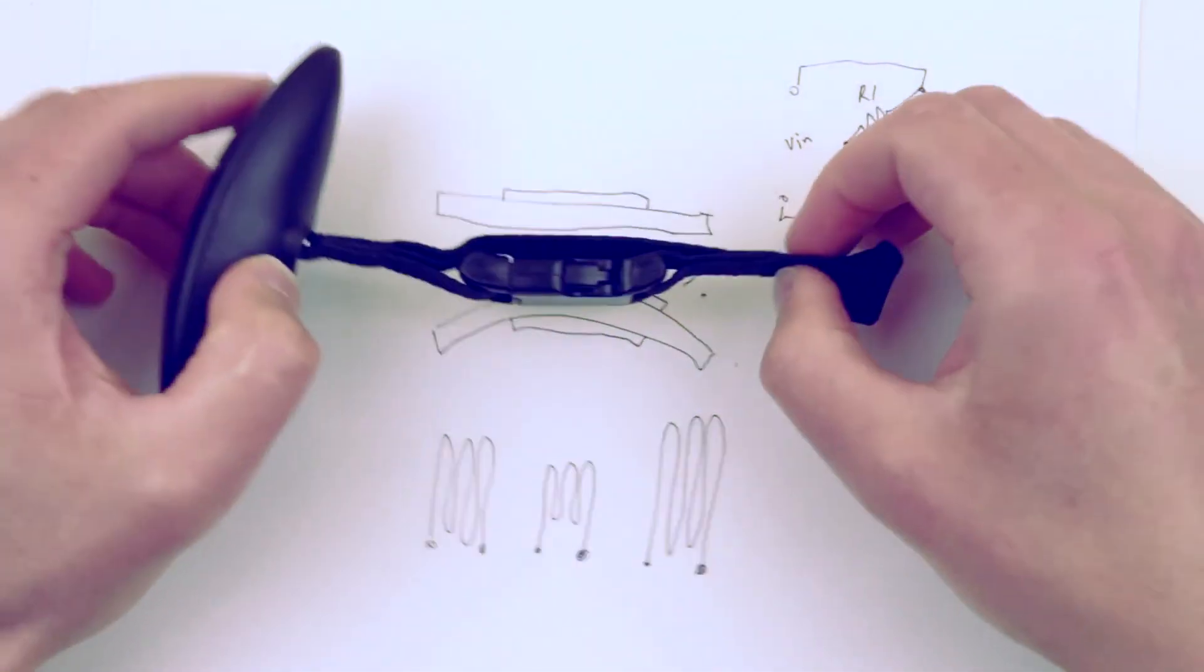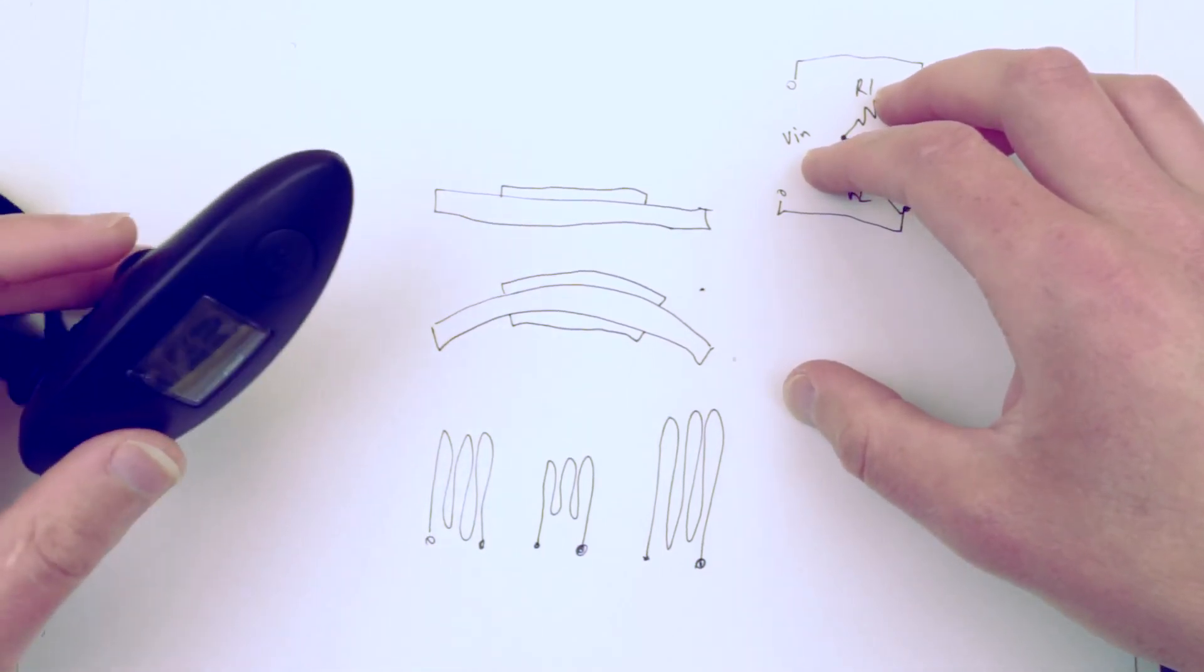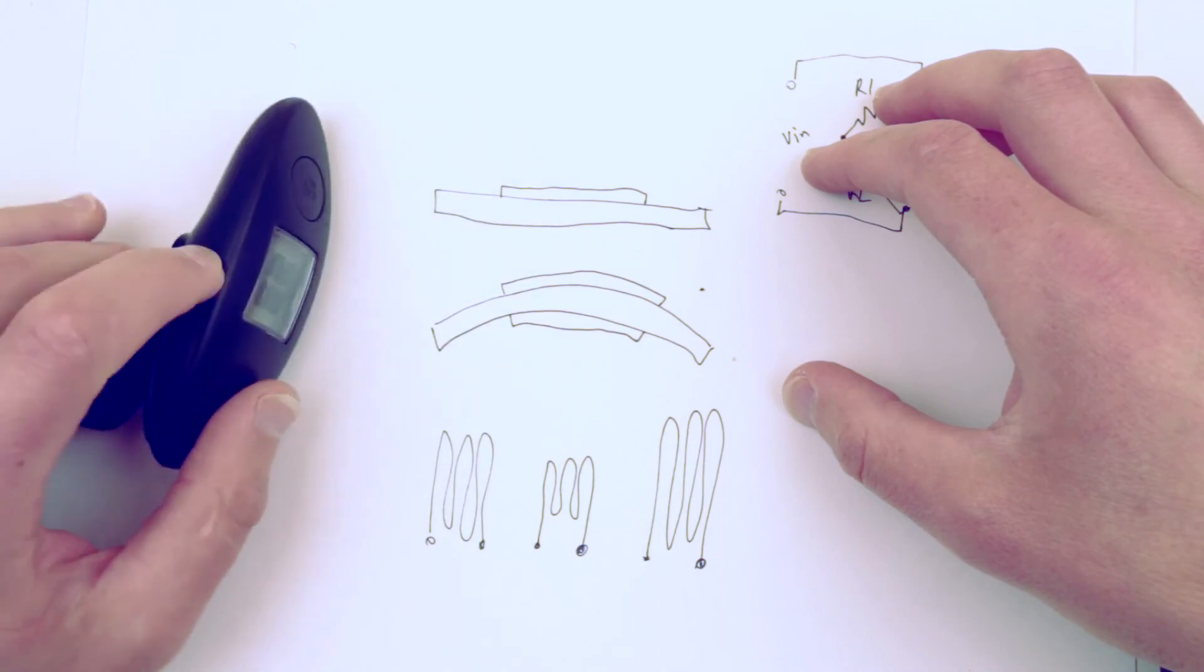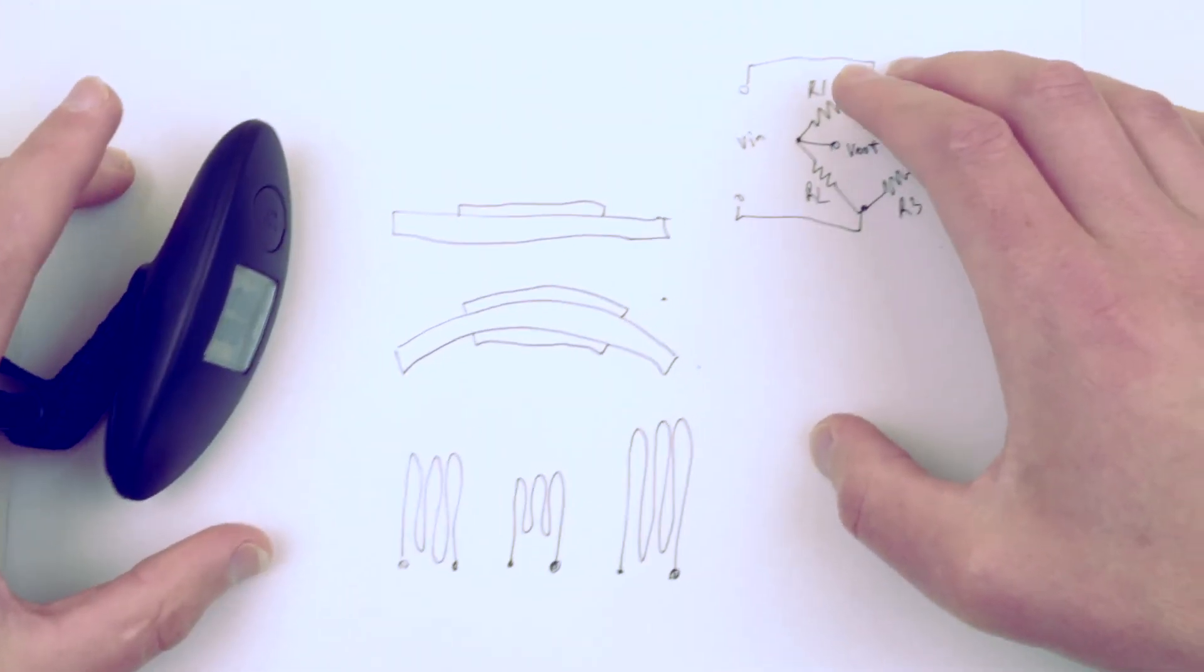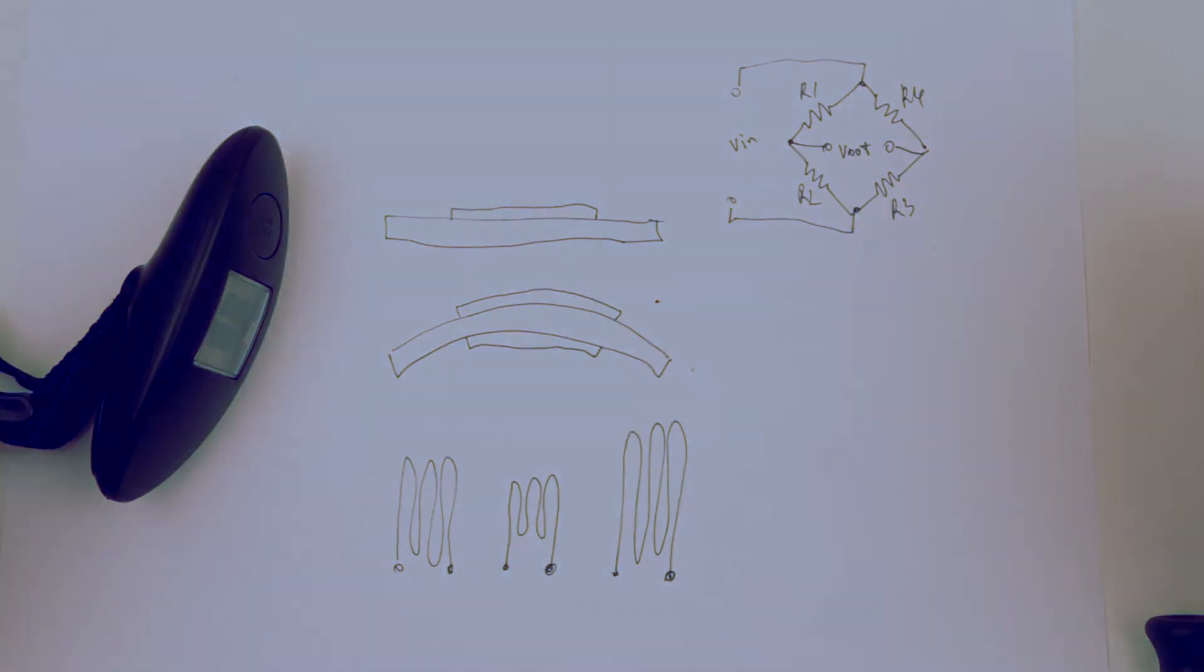This is pretty much it for now. There's nothing more we can do here. So here is the cheap dollar store luggage scale which works okay for many things, and a little bit of theory of operation and how it works. Hope you guys like it, see you next time.